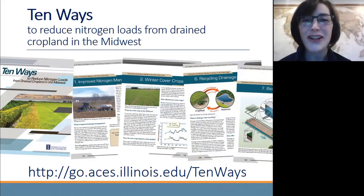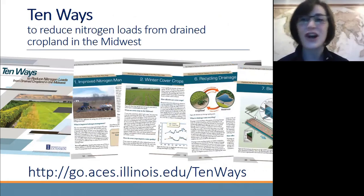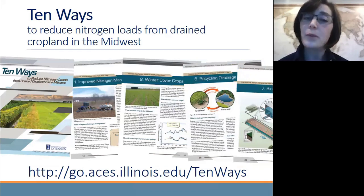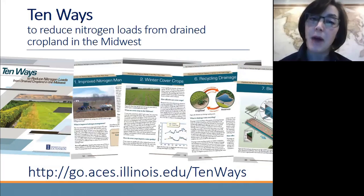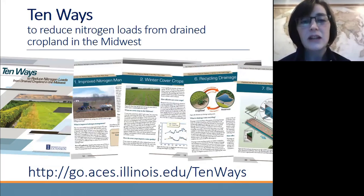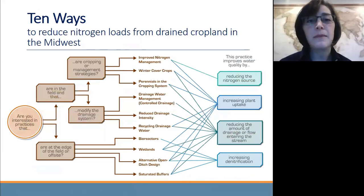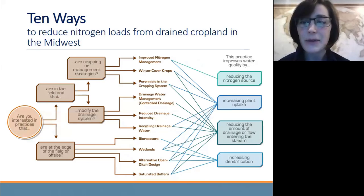Fortunately, Extension colleagues across the Midwest have come together to develop a new booklet that describes the 10 ways to reduce nitrogen loads from drained cropland across the Midwest. There's really just about 10 practices to do this. In our new booklet, which you can access through the link at the bottom of the screen, the booklet describes all 10 ways. You have access to this information freely online.